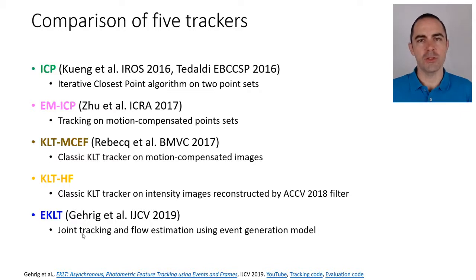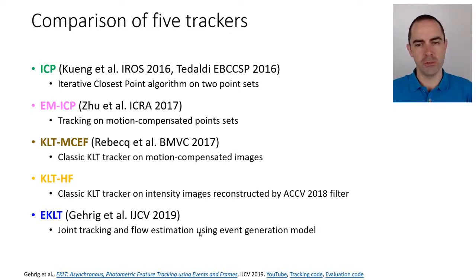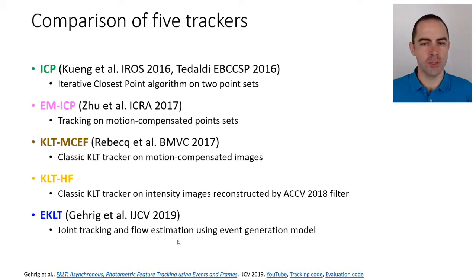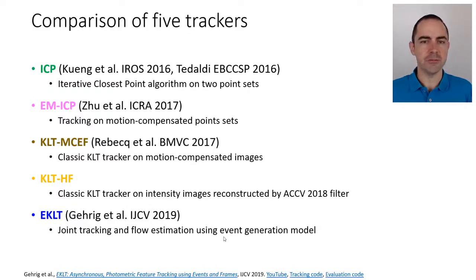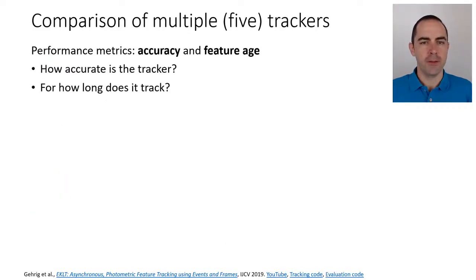Finally, eKLT — the fifth method — is the one proposed in the paper from the previous video. It does joint tracking and optical flow estimation using the event generation model, comparing brightness increment images. The first two methods work on point sets and the bottom three work on reconstructed or motion compensated images.